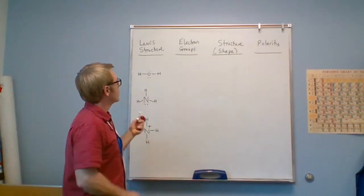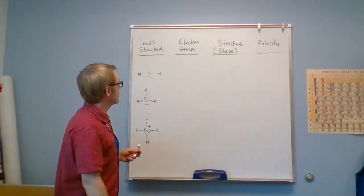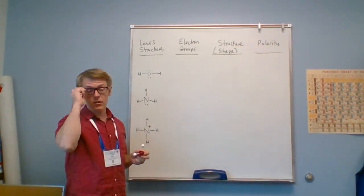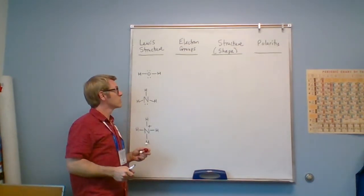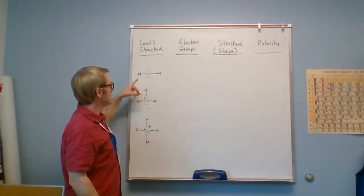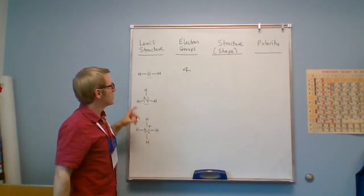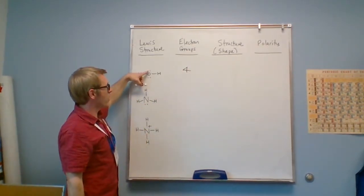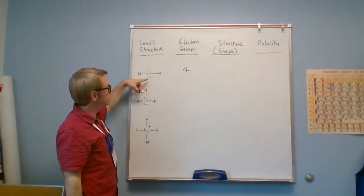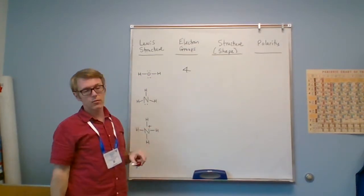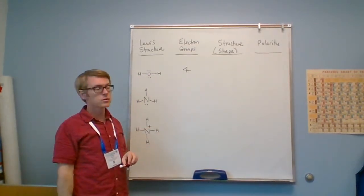Electron groups are clusters of electrons around the central atom. So if we look at a water molecule here I have four electron groups - four because I have a lone pair above and below that's two, and a bonding pair left and right so that's an extra two. So I have four different clusters of electrons.